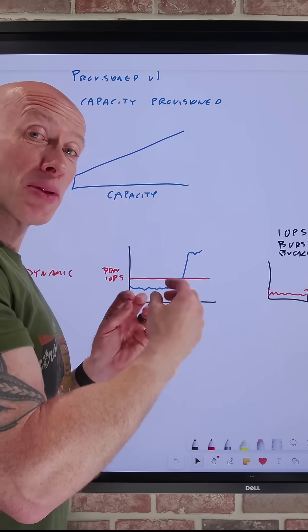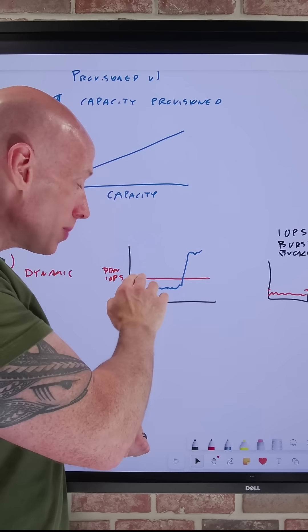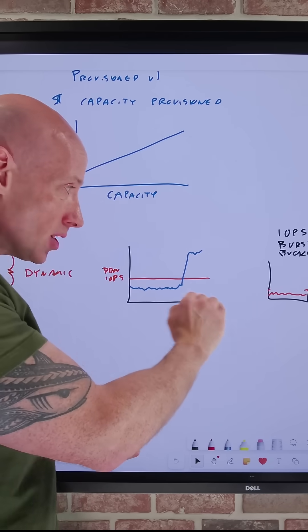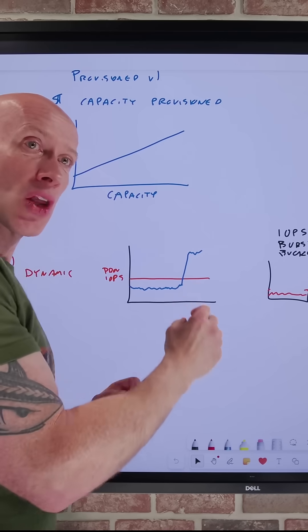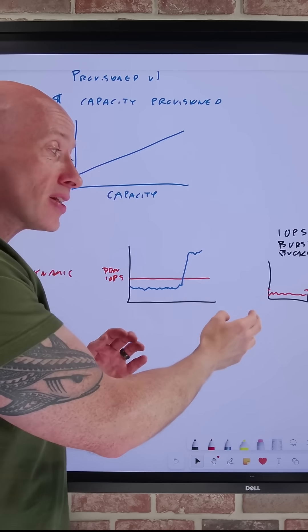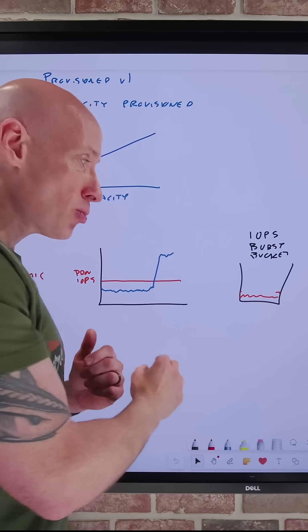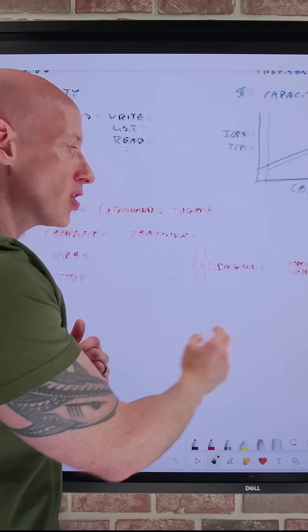We also get a nice little IOPS burst bucket, so if I'm consuming less IOPS than I've provisioned, we start accruing credit, which I can then use if I burst above that provisioned amount to get that extra performance above that provision level.